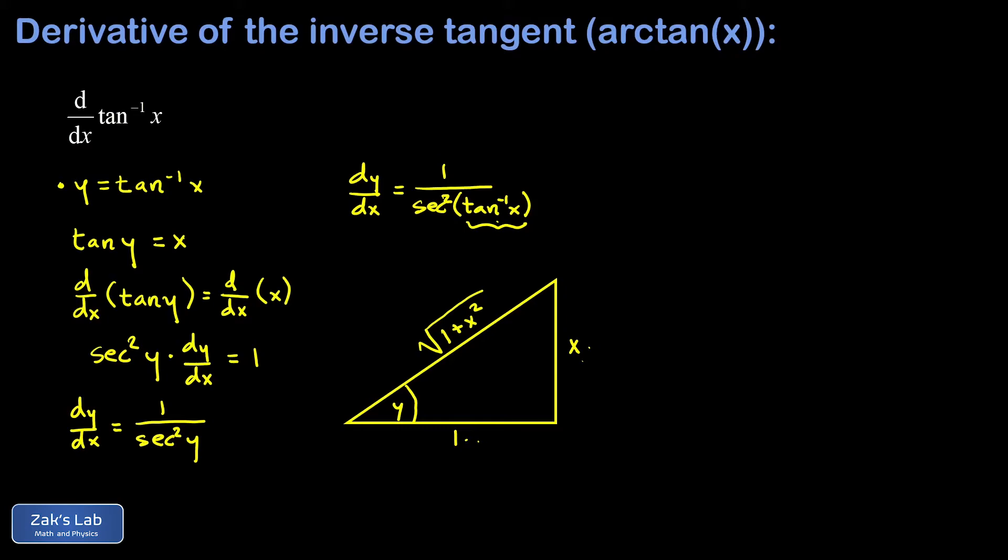Now our goal is to get the secant of this angle, so the secant of y, or secant of the angle whose tangent is x. Secant is 1 over the cosine. Well the cosine would be adjacent over hypotenuse, the secant is hypotenuse over adjacent. So the secant of the angle whose tangent is x is just the hypotenuse, square root of 1 plus x squared, over 1.